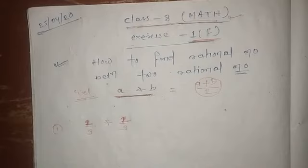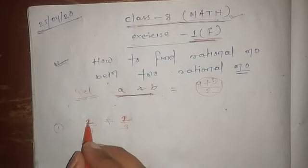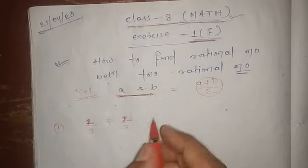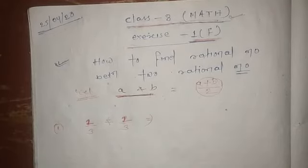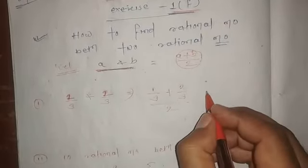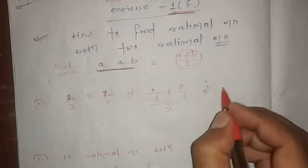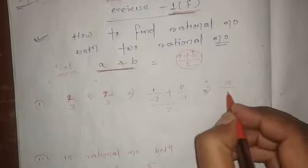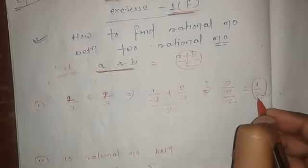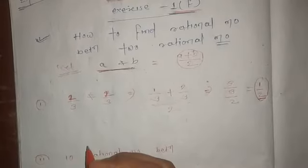Let me take an example, 1 upon 3 and 2 upon 3. If we have to find the rational number between them, simply add the two: 1 upon 3 plus 2 upon 3, and then divide by 2. If we calculate this, we get 3 upon 3 and then 2, which is 1 upon 2. So this 1 upon 2 is the rational number between these two.